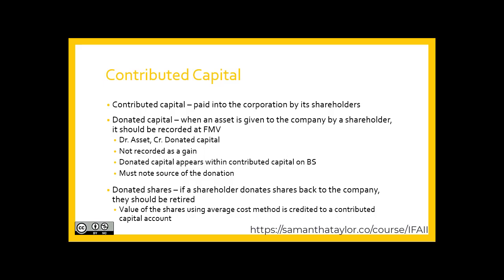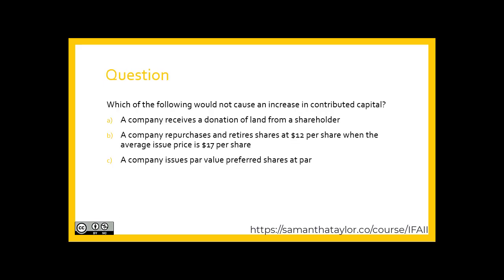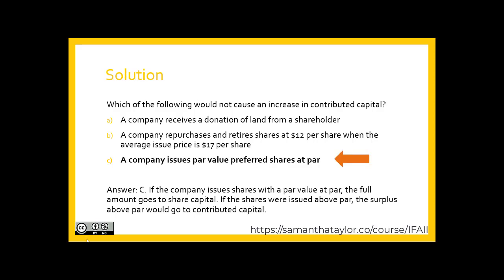Let's look at a question: Which of the following would not cause an increase in contributed capital? A: a company receives a donation of land from a shareholder. B: a company repurchases and retires shares at $12 per share when the average issuance price is $17 per share. Or C: a company issues par value preferred shares at par. Option A would result in an increase in contributed capital because they would debit the asset and credit the contributed capital account to reflect that donation.